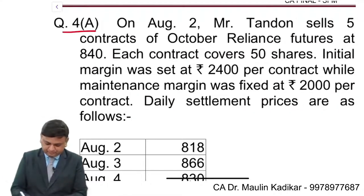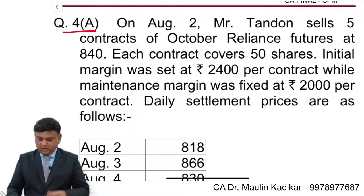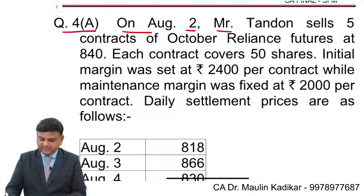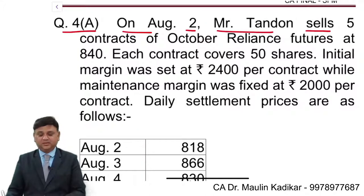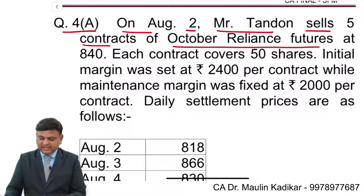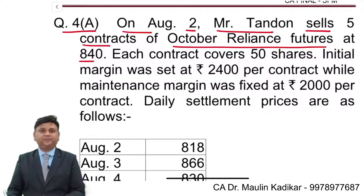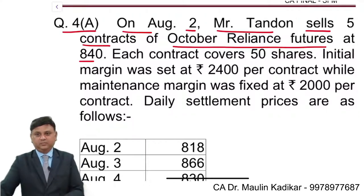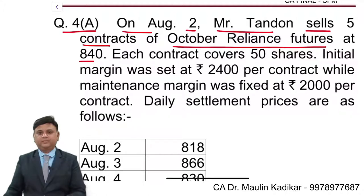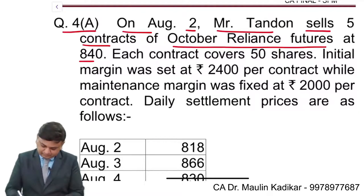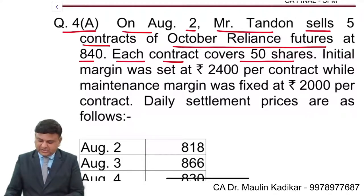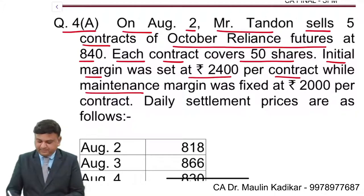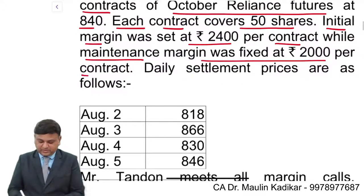Question number 4a. On August 2, Mr. Tundon sells 5 contracts of October Reliance Futures at the rate of 840. The price at which the contract is entered upon is 840. Each contract covers 50 shares, that is the lot size. Initial margin was 2400 per contract. Maintenance margin was fixed at the rate of Rs. 2000 per contract.